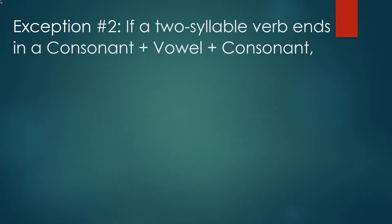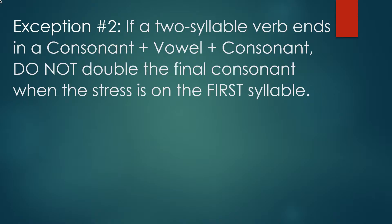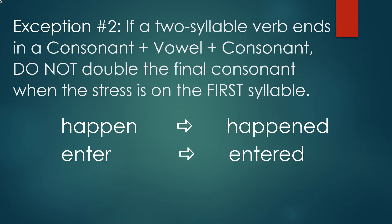Exception number two. If a two-syllable verb ends in a consonant-vowel consonant, do not double the final consonant when the stress is on the first syllable. For example, the word happen. Happen ends in a consonant-vowel consonant, but the stress on the word happen is on the first syllable. So when we add ED, we do not double the final consonant. Happen becomes happened, enter becomes entered, offer becomes offered.